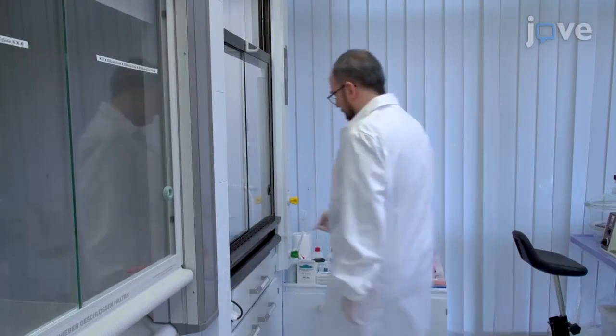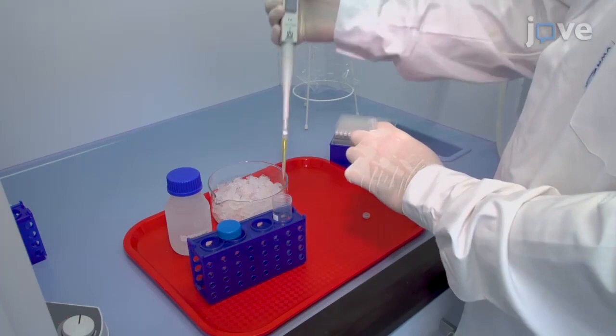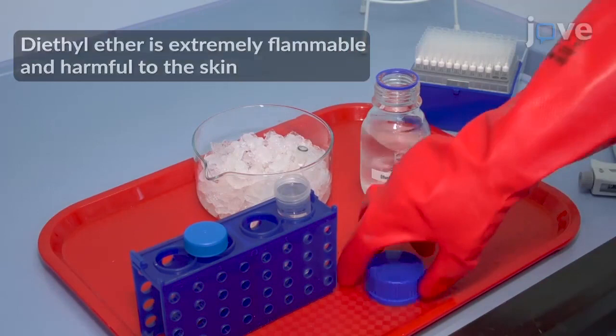To begin delipidation in a fume hood, mix 1-2 milliliters of prepared HDL solution containing 5 milligrams of HDL particles with 50 milliliters of pre-cooled 3-2 mixture of ethanol-diethyl ether in a conical centrifugation tube.